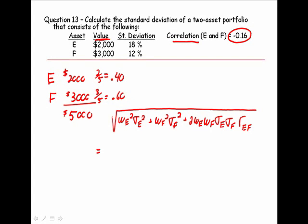It's really a plug and chug at this point. 40% of our money is squared times 18 squared, 60% of our money squared times 12 squared, plus 2 times 0.4, 0.6, 18, 12, and our correlation of negative 0.16.